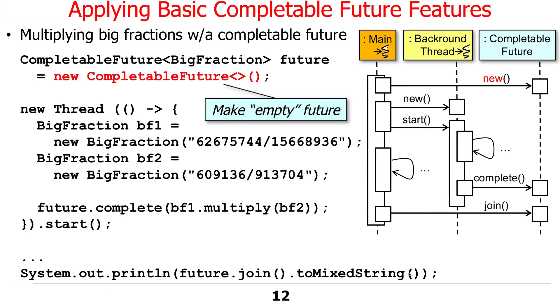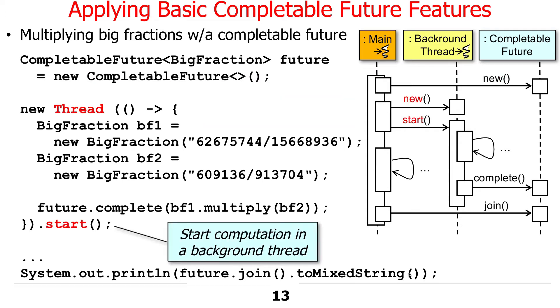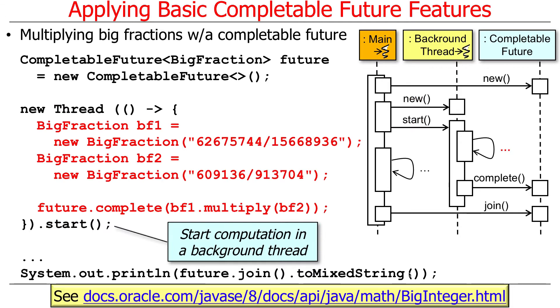So we start out by making ourselves an empty future, so it has no value yet. We then go ahead and start a background thread. So the thread's running in the background. And this uses big integers in order to do the big fractions. So these are pretty big fractions. As you can imagine, we're going to multiply them together.